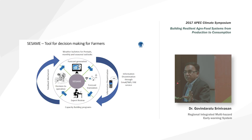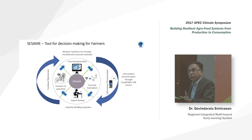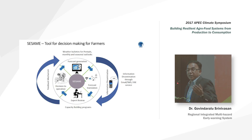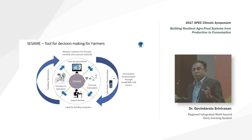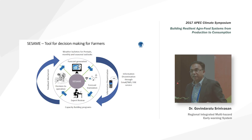The agriculture department provides access to block-level agriculture extension officers who are trained on how to interpret and use this web-based tool. They are presented with thresholds for adverse weather and agronomy-related weather conditions in a bulletin format, which they combine with local information and use to advise farmers. The farmers, already trained through climate field schools, are in a position to receive and act on this information. The process is not perfect but it is in place and will evolve over time.